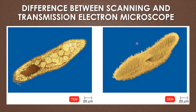This image shows the difference between the scanning and the transmission electron microscope. In the scanning electron microscope, the electron beam scans over the surface, so the surface morphology of the cell of the microorganism alone is identified.